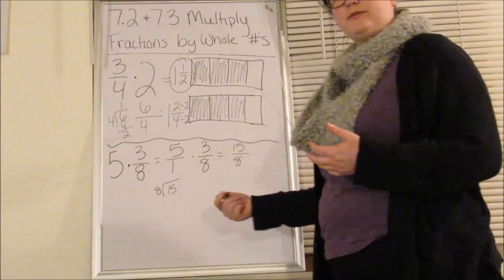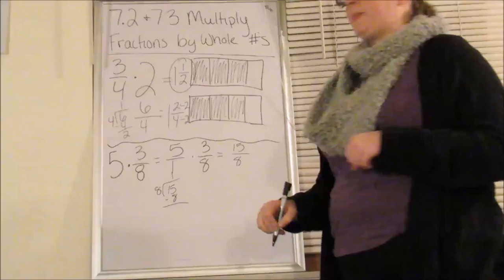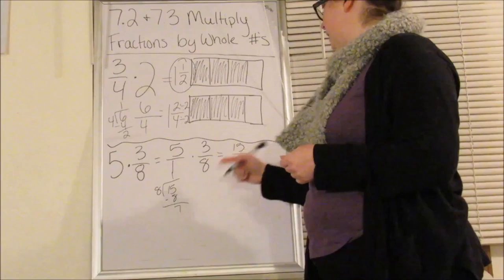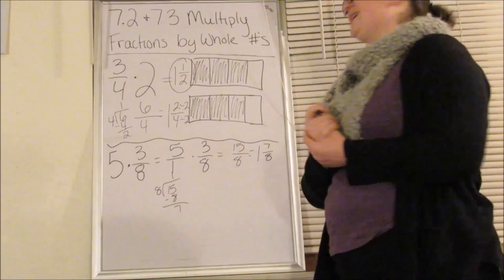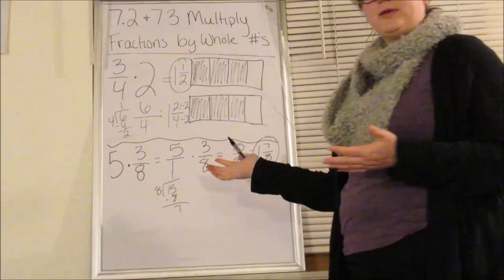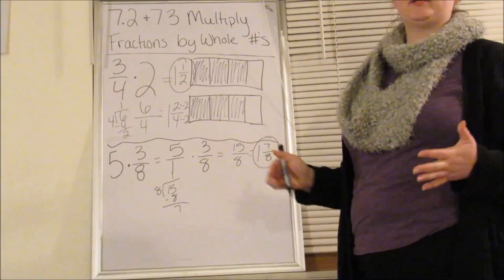I have to convert this to a mixed number. So I can divide fifteen divided by eight. Eight goes into fifteen one time. One times eight is eight. I subtract. I get seven. So that means my answer is going to be one and seven-eighths.